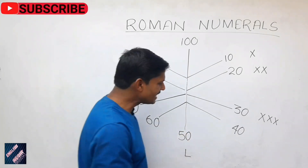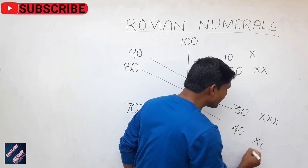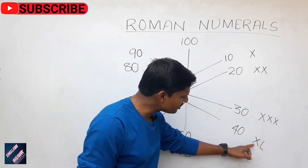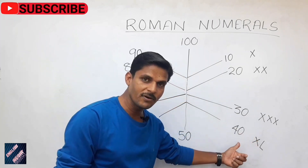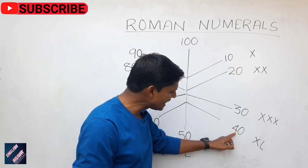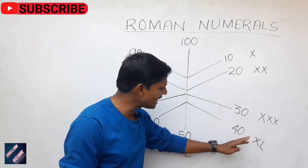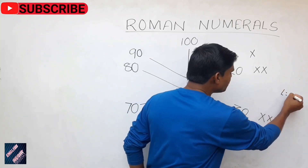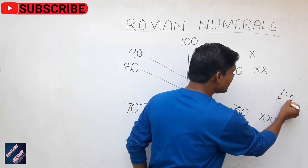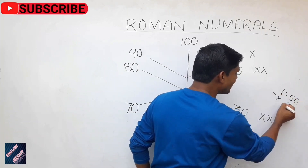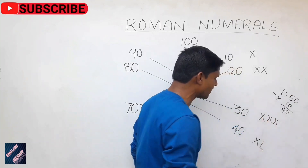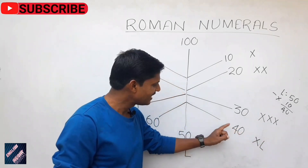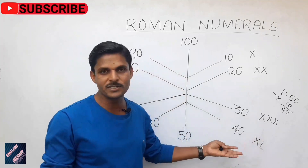But what about 40? 40 is written as XL. So why? L is 50 and X is 10. When X is written before L, it shows that 40 is X less than L — meaning 10 less than 50. So 50 minus 10 equals 40. X is used before L to show that.